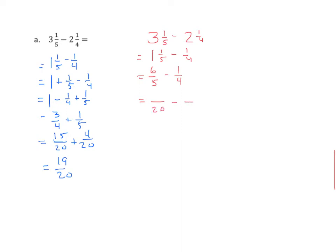We now continue by finding our common unit, which is 20ths. 6 fifths is equal to 24 twentieths, and 1 fourth is equal to 5 twentieths. We find the difference between 24 and 5, and we get 19 twentieths. Both methods work quite well. We're going to work with a bigger number on the next problem, and we can see some of the advantages of technique 1 and some disadvantages to technique 2.